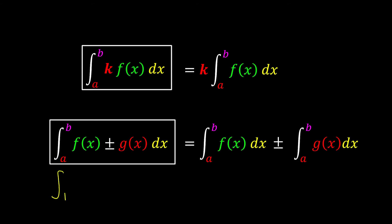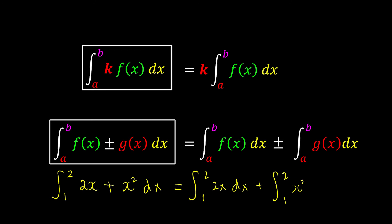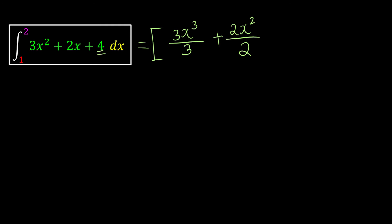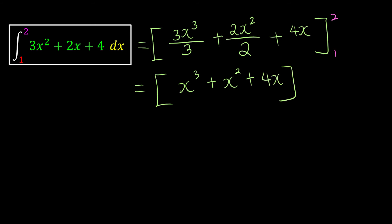For example, the integration from 1 to 2 of 2x plus x squared dx can be written as the integration from 1 to 2 of 2x dx, plus the integration from 1 to 2 of x squared dx. Using square bracket notation and integrating term by term: x squared becomes x cubed divided by 3, x becomes x squared over 2, and a constant integrates to 4x. After simplifying, this becomes x cubed plus x squared plus 4x, with limits from 1 to 2.